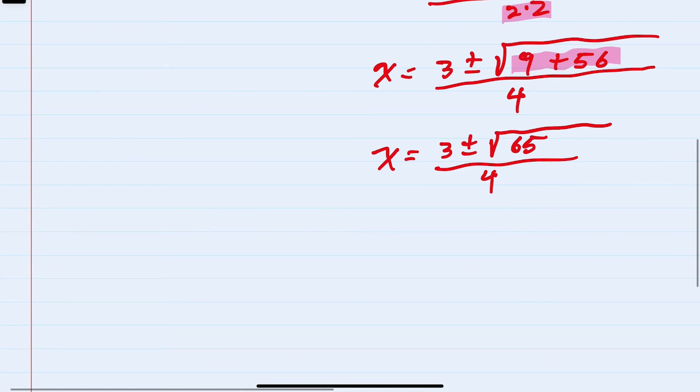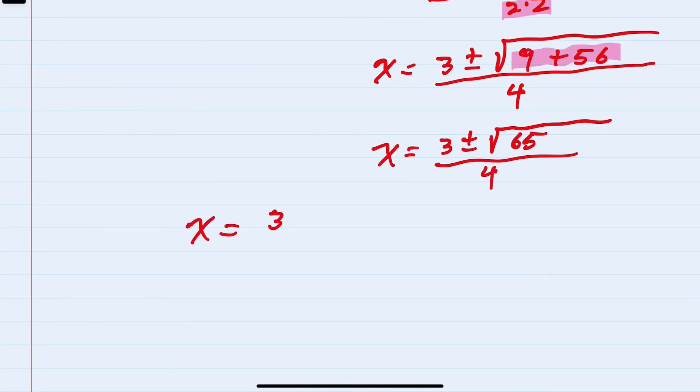So we can see that we'll have two solutions: the first being 3 plus the square root of 65 over 4, the second one being 3 minus the square root of 65 over 4. Recall that we need